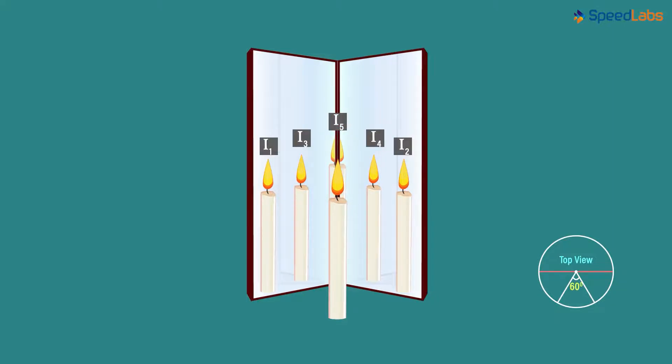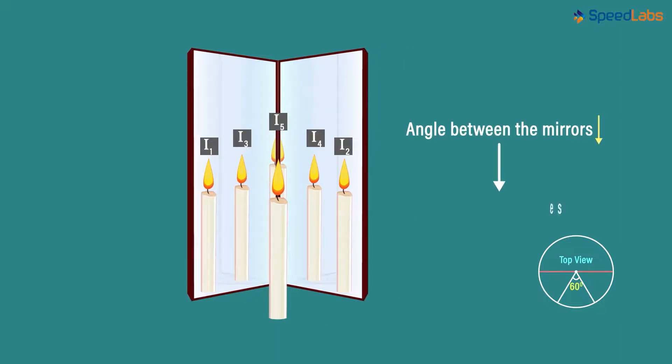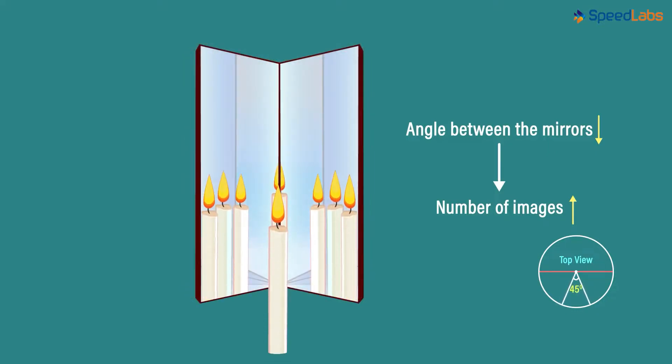We see that as we decrease the angle between the two mirrors, the number of images keep on increasing. When we further reduce the angle to 45 degrees, we get 7 images.